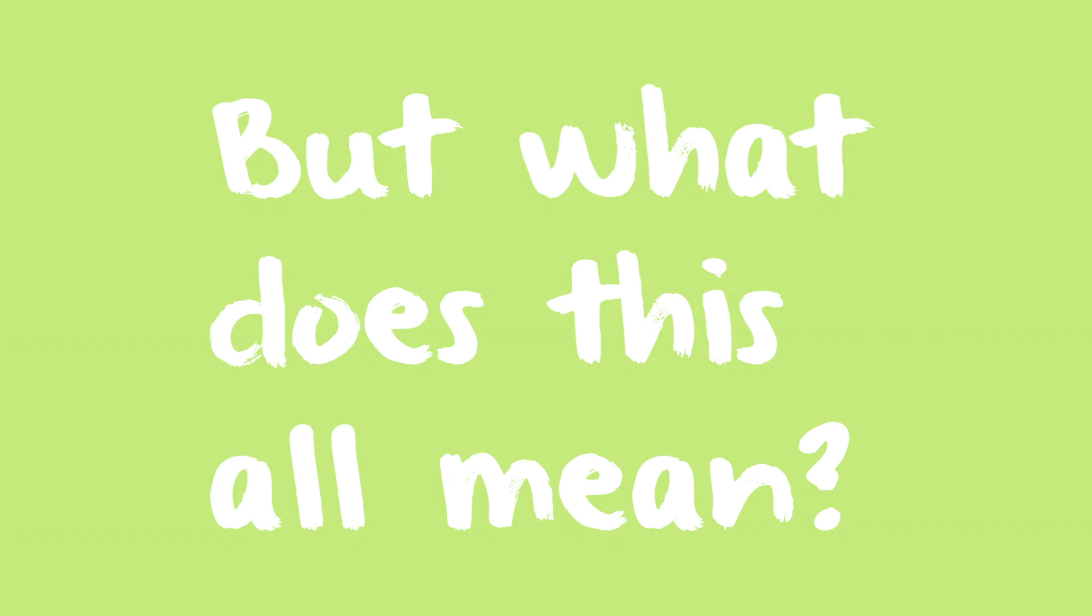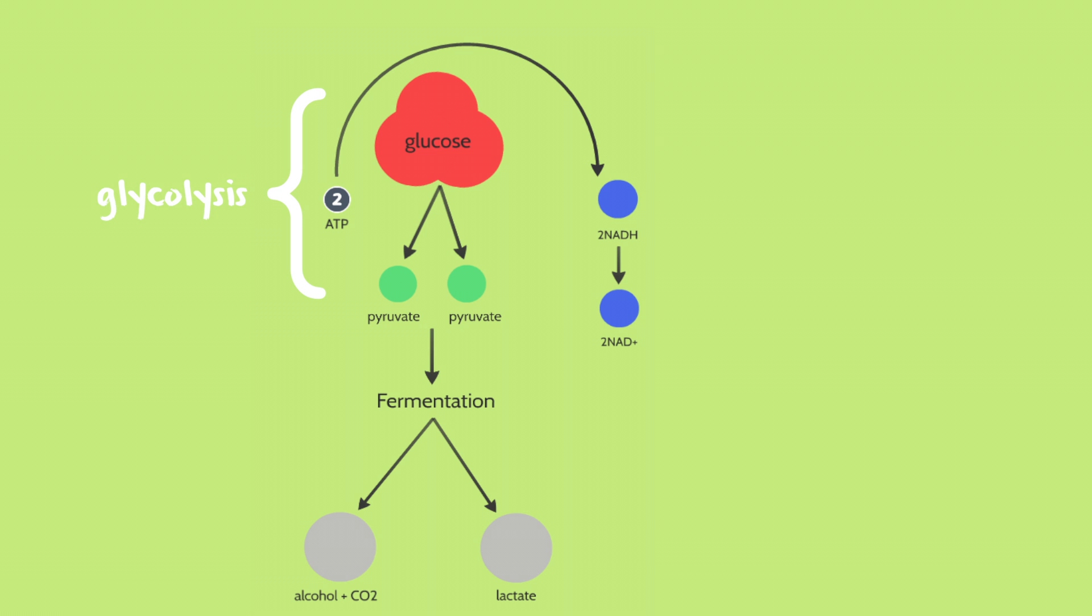But what does that all even mean? Let's think of it this way, football heads. Anaerobic respiration is like a good game of football. Think of glycolysis as a quarterback. He calls the play and starts it off. Glycolysis takes a glucose molecule and divides into two pyruvic acid molecules, and that's two molecules of ATP.